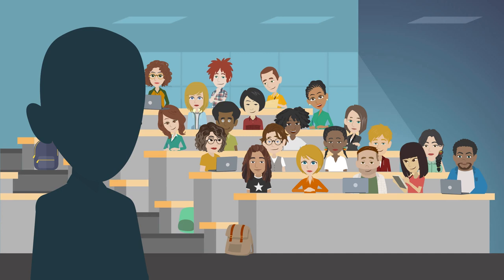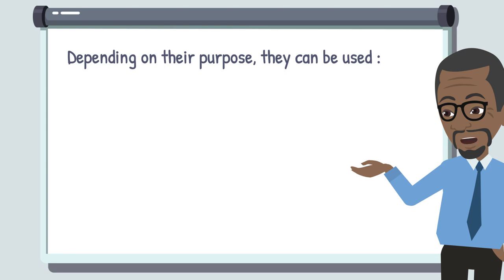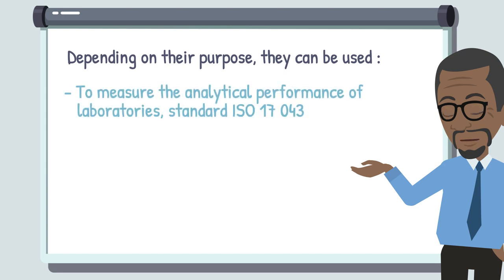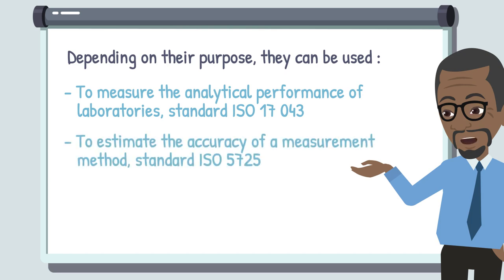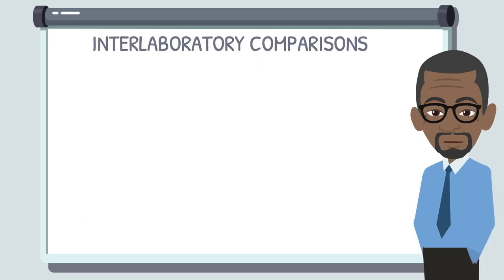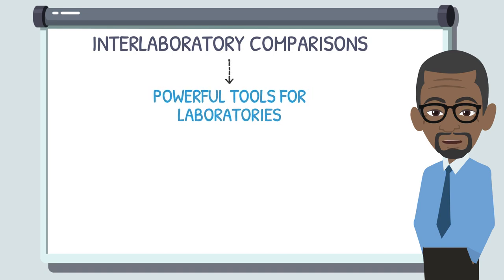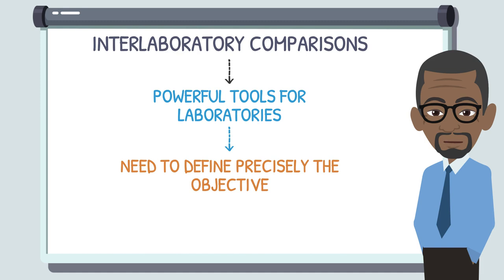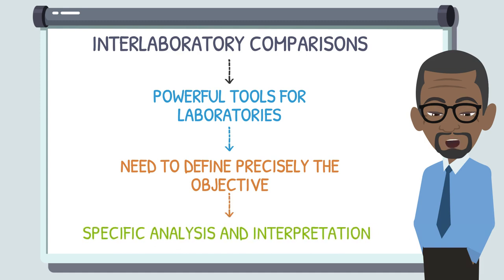In conclusion, PTS cannot be used to do everything. Depending on their purpose, they can be used: to assess the analytical proficiency of laboratories, standard ISO 17043; to estimate the accuracy of a measurement method, standard ISO 5725; to assign a consensus value to a material, standard ISO 17034. As we can see, PTS present powerful tools available to laboratories, but they require a precise definition of their purposes in order to justify the analyses performed and their specific interpretation.